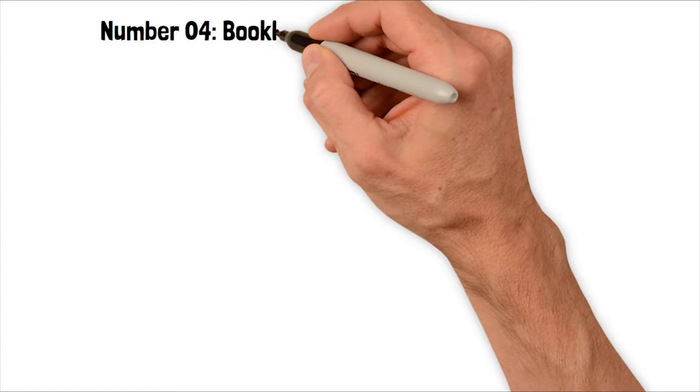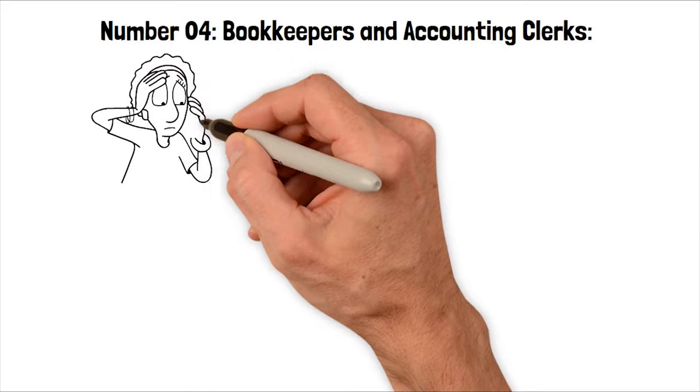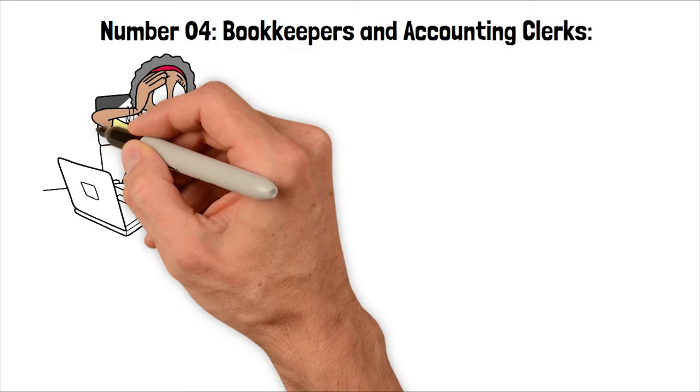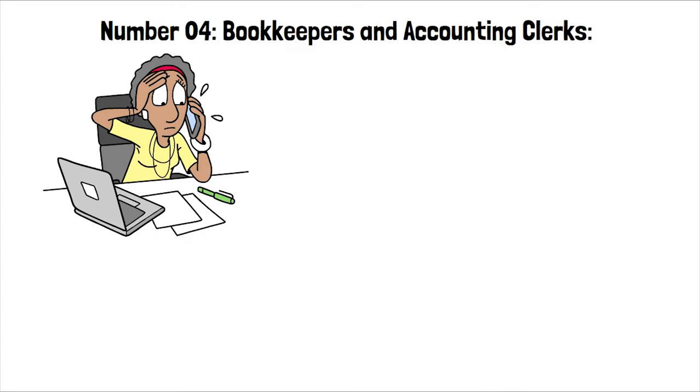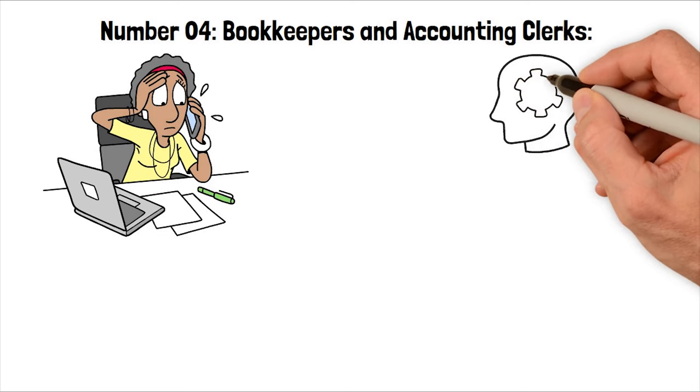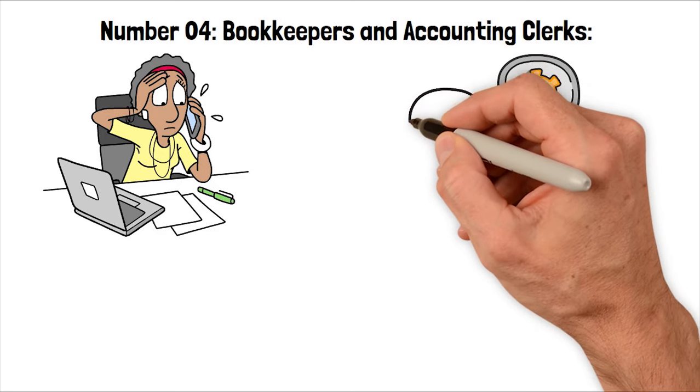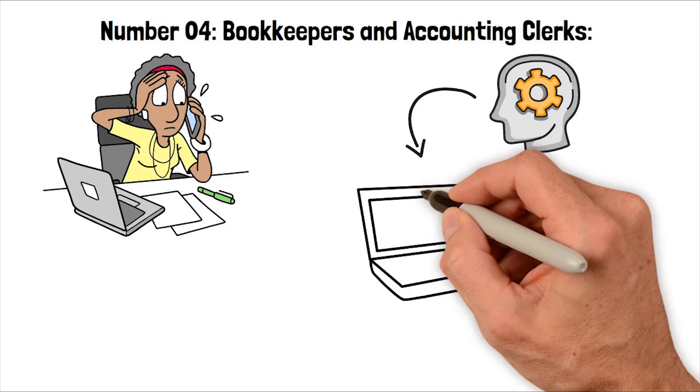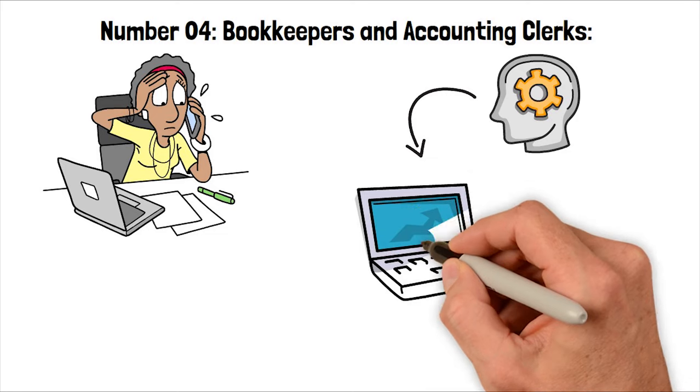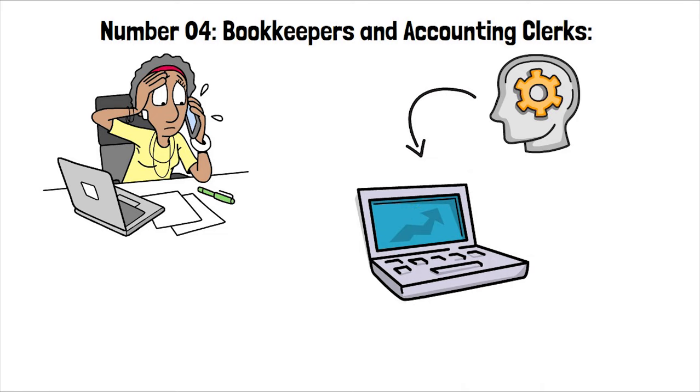Number four, bookkeepers and accounting clerks. Bookkeepers and accounting clerks are seeing their roles change with the rise of AI-driven accounting software. These automated systems handle tasks like reconciling accounts and generating financial reports, reducing the need for manual data entry. As businesses adopt AI solutions, the demand for human bookkeepers and clerks decreases. However, this shift also opens up opportunities for them to focus on higher-level analysis and strategic financial planning, showcasing the evolving nature of their roles alongside AI automation.